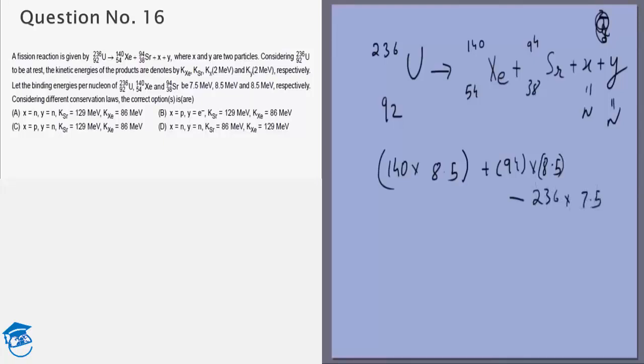Remember, nucleons are protons plus neutrons. So this is the energy absorbed, this is the energy released. If you calculate this, it will come out to be 219 mega electron volts. This is the total energy released.